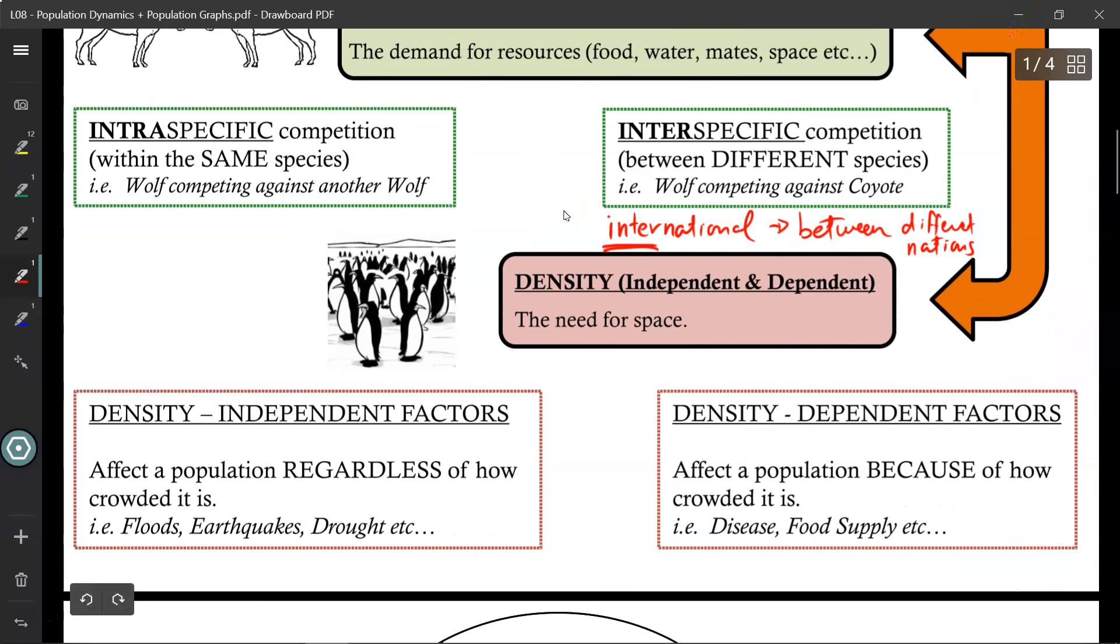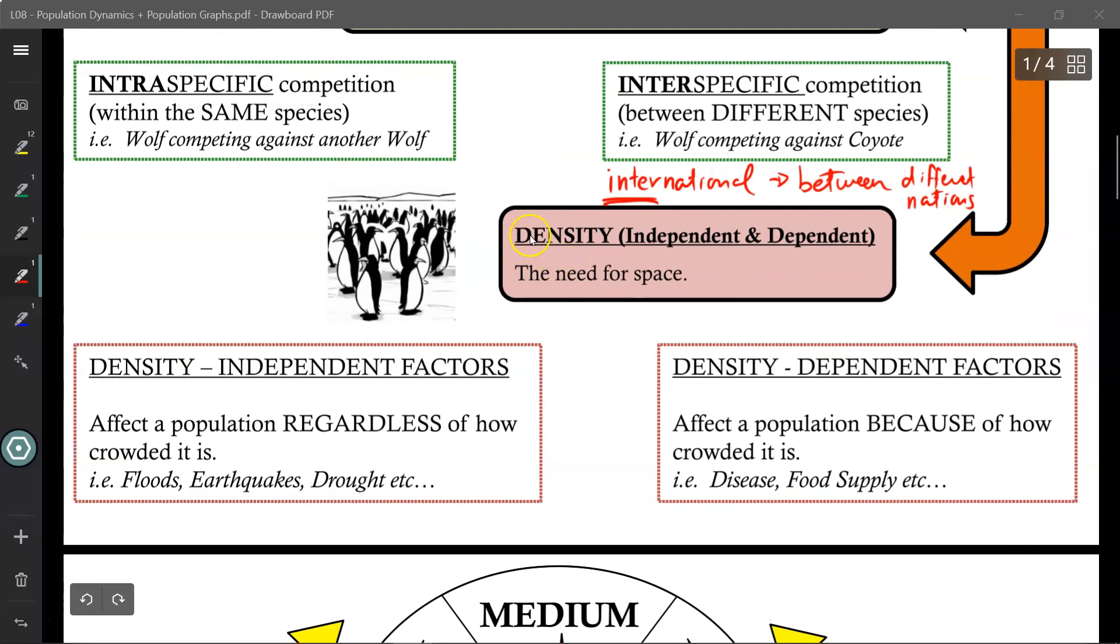And the final factor that affects carrying capacity is density. All organisms need space. If the ecosystem has a lot of space, then it can accommodate a large population. If it doesn't have a lot of space, then it can only accommodate a smaller population.